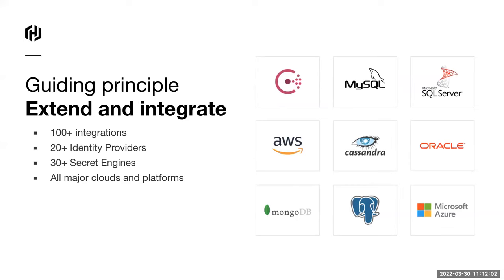The second guiding principle is that once you have a common notion of identity, Vault has a variety of integrations for different platforms and end systems — whether that be databases, cloud providers, message queues, or an LDAP directory. For example, you can generate on-the-fly AWS credentials, or if a regulation requires you to rotate database credentials on a monthly basis, Vault has those capabilities.